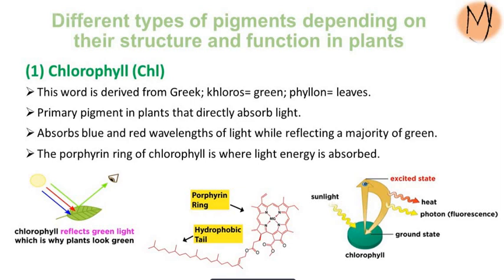Pigments are also categorized based on their structure and function in plants. The first type is chlorophylls. This word is derived from Greek: chloros means green and phyllon means leaves. Chlorophylls are the primary pigments in plants that directly absorb light — specifically blue and red wavelengths — while reflecting the majority of green. The chlorophyll molecule has a porphyrin ring and a hydrophobic tail. The porphyrin ring is where light energy is absorbed. A porphyrin is a large ring molecule consisting of four pyrroles — smaller rings made from four carbons and one nitrogen — connected through a series of single and double bonds forming one large ring.